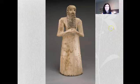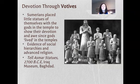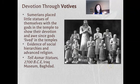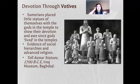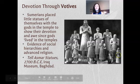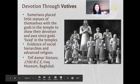These votive figures are actually in the Iraq Museum in Baghdad. The Sumerians stylized these little figures as a way to say: 'We can't go into the temple, but we can put these statues of ourselves in there so the gods know we're always watching, always praying, and always devoted — even though we can't go there ourselves.'